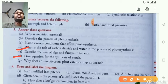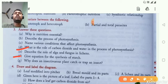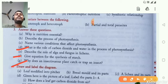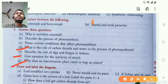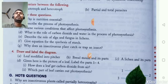Give the equation for the synthesis of starch. Carbon dioxide plus water, in the presence of chlorophyll and sunlight, produces glucose and oxygen. Why does an insectivorous plant catch and trap insects? Insectivorous plants grow in nitrogen-deficient soil, so they trap insects to obtain nitrogen.